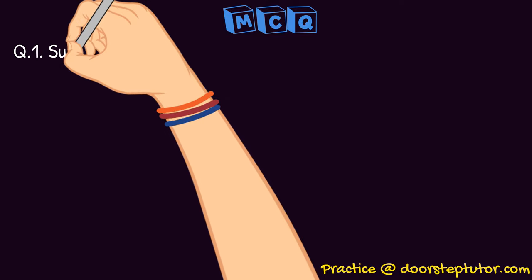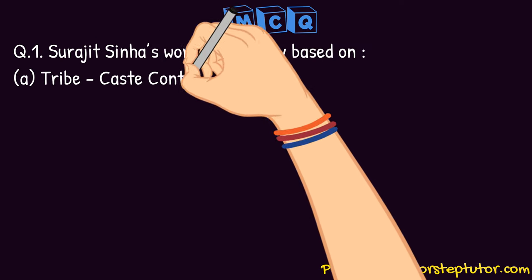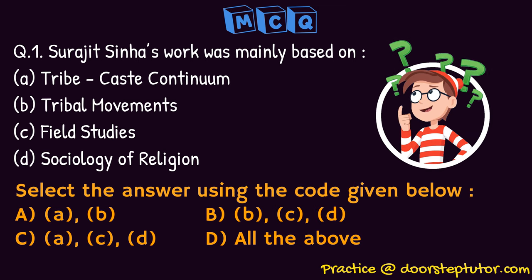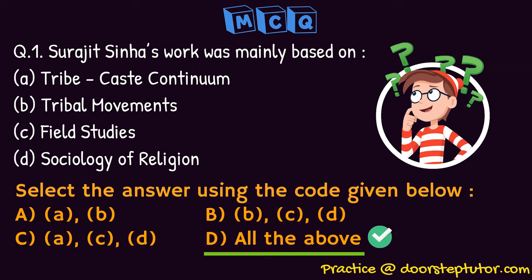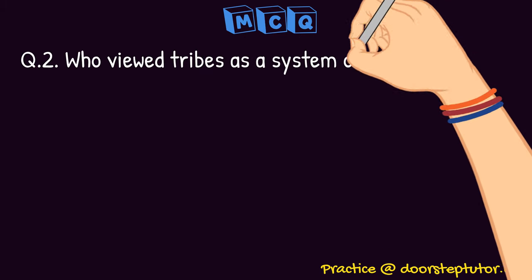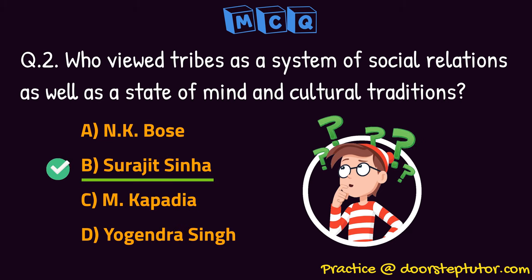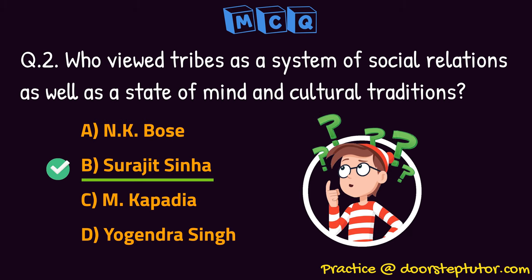Let us discuss some questions. Surajit Sinha's book was mainly based on — if you see the options, he did his field studies, was very interested in tribe-caste continuum, was also interested in tribal movements and sociology of religion. So the answer is option number 4, all of the above. Next question: who viewed tribes as a system of social relations as well as a state of mind and cultural traditions? It was Surajit Sinha, who said that although there are so many social relations, patterns, cultures, and beliefs, there is an integration and unified transformation of civilization. The answer is option number 2, Surajit Sinha.